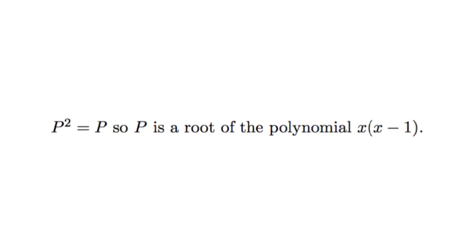There's another way we could have seen this if we know a little bit more linear algebra. If P squared is P, then P is the root of the polynomial x times x minus 1. And so the minimal polynomial of P has to actually divide this polynomial given. Since it splits into linear factors, this means that P has to be diagonalizable.